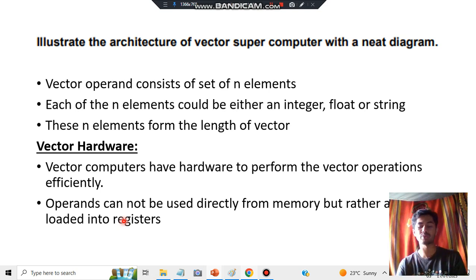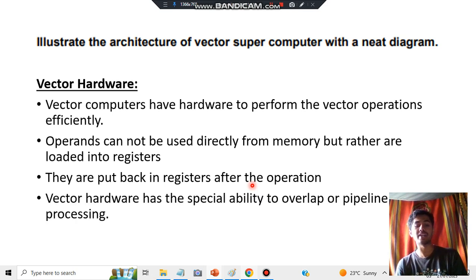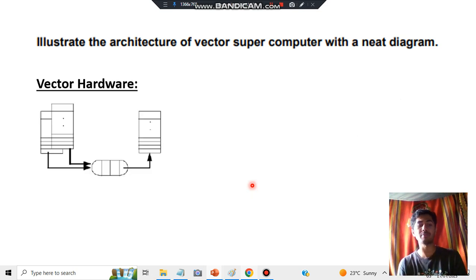Remember, registers are used for the vectors. They are put back into the registers after the operation. When the operation is done, we will be putting back into the registers whatever answers we have got. And it has a special ability to overlap or pipeline the operand processing. What is pipelining? Pipelining means performing two or more tasks together at the same time. Vector hardware has a special ability in which you can overlap or pipeline the operand processing. After I have written this part, you have to draw the diagram.